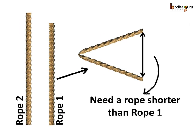As the distance between the two ends of rope 1 has decreased, another rope joining the two open ends has to be shorter than rope 1, not longer for sure.